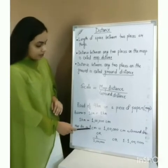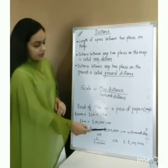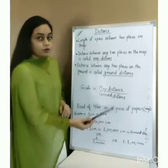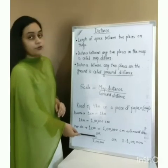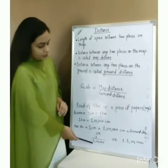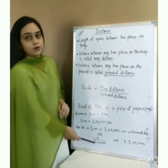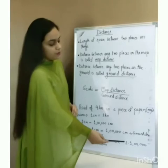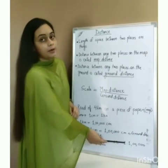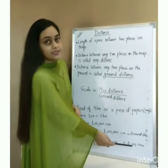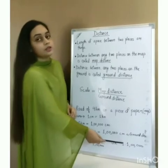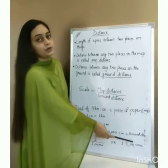So 1 centimeter of map distance is equal to 1 lakh centimeters of ground distance. You can write it in fraction form, where the numerator represents map distance and the denominator represents ground distance. Or you can write it in ratio form as 1:1,00,000. That means 1 centimeter on the map represents 1 lakh centimeters, which equals 1 kilometer, on the ground.